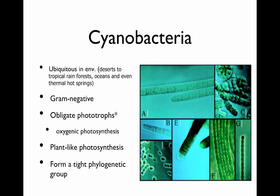Finally, there are the cyanobacteria. Cyanobacteria are ubiquitous in the environment — some of the most successful organisms on the planet. They're found everywhere: deserts, tropical forests, oceans, and even thermal hot springs. Various cyanobacteria have been isolated from the desert. They're gram-negative, obligate phototrophs, and do oxygenic photosynthesis — a plant-like photosynthesis. They form a tight phylogenetic group.